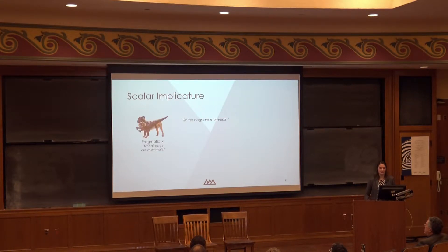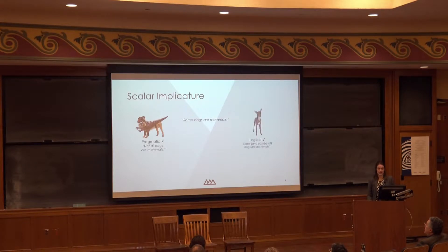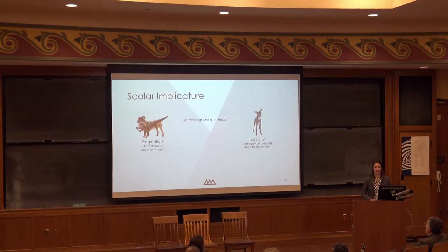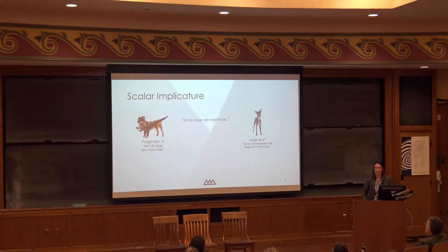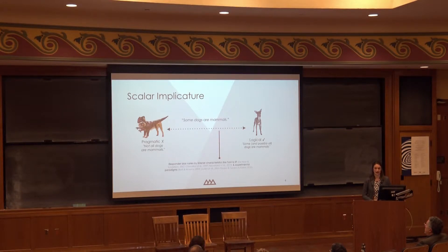If you derive the implicature 'not all dogs are mammals,' that doesn't make sense—unless you think some dogs are reptiles or something. If you stay at the literal meaning, 'some dogs are mammals'—in fact, they all are—this makes sense. And people, even native-speaker adults, vary a lot in the extent to which they derive the pragmatic meaning. Depending on your dependent variable, you can see a whole gradient of people deriving the implicature more or less often.